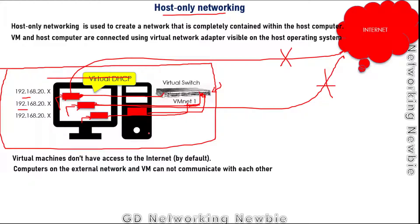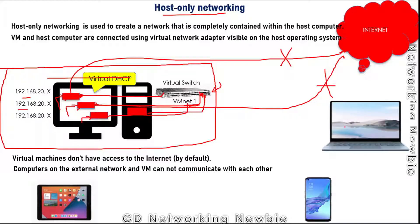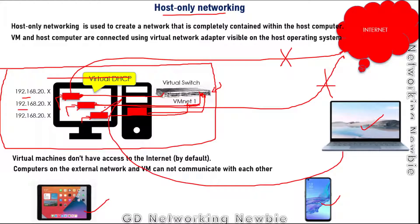Computers on the external network — like a laptop at home or other nodes on the same network — will not be able to communicate with these host-only virtual machines. The VMs can only communicate with the host and with each other, but not with the rest of the world. This makes host-only ideal for setting up a private network.